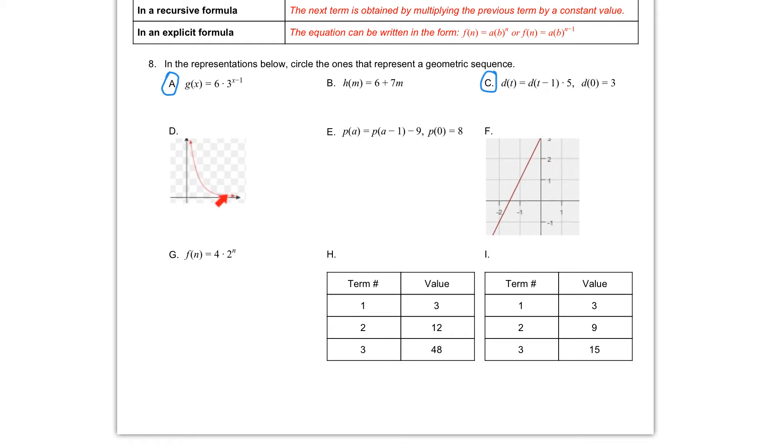Letter D, we're given a graph. This graph has that curve that's coming down and around. This is called an exponential decay graph. This is geometric. If you take a look at the table above, you can see that this curve indicates that we have a geometric sequence. So we can go ahead and circle letter D.